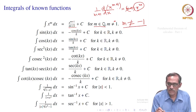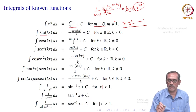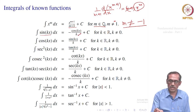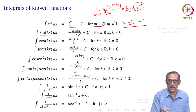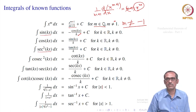Similarly, if you go to sin(kx): if you differentiate minus cos(kx)/k, that derivative should be sin(kx) and it is. So we can write: integral of sin(kx) dx equals minus cos(kx)/k plus c, where k should not be equal to 0. Integral of cos(kx) similarly gives sin(kx)/k. The derivative of tan(kx) is sec²(kx) times k, so integral of sec²(kx) equals tan(kx)/k. Again, k should not be 0.